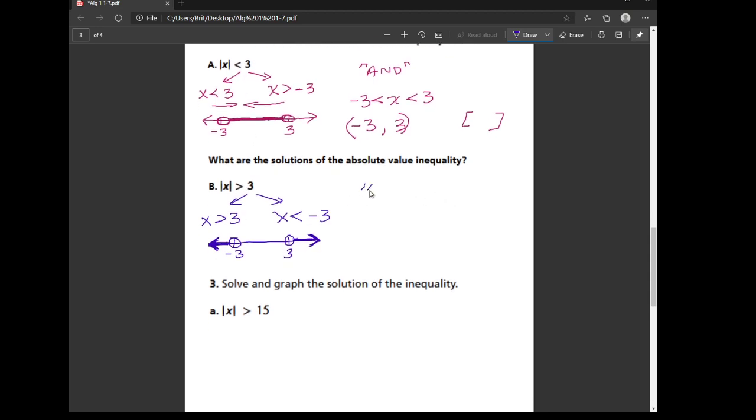Now this one is an OR inequality. So if the alligator is eating the absolute value you'll get an OR. And if the alligator is facing away from the absolute value you get an AND. Now for this one I could just write an OR in between here and that is the correct answer. But if I need to write it in interval notation, this is how you would write it.